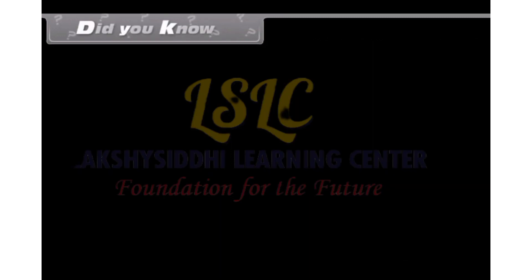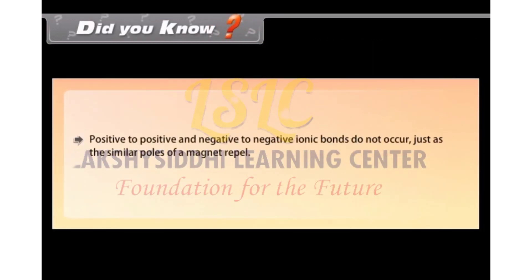Did you know? Positive to positive and negative to negative ionic bonds do not occur just as the similar poles of a magnet repel.